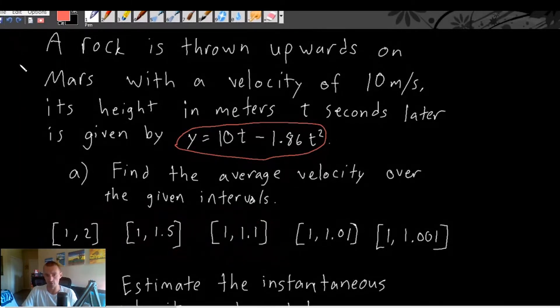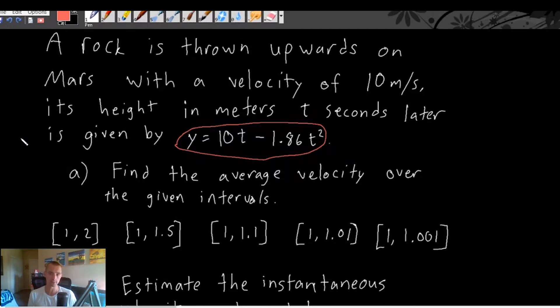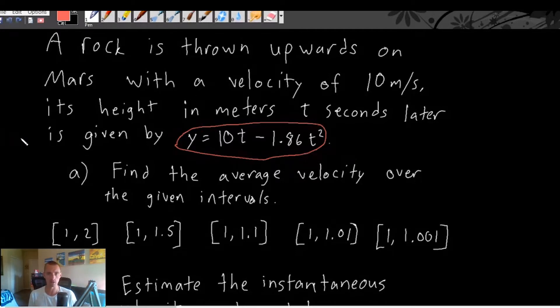Instantaneous velocity is a bit different. Instantaneous velocity is not going to look at the velocity over a period of time. It's going to look at how fast is something moving at one specific split second. Instantaneous means at this one point in time, how fast is the object moving?